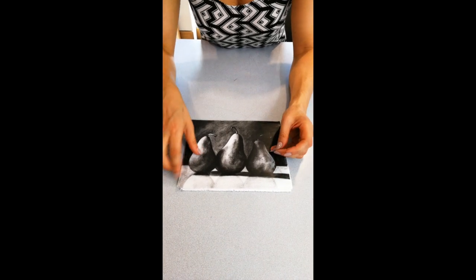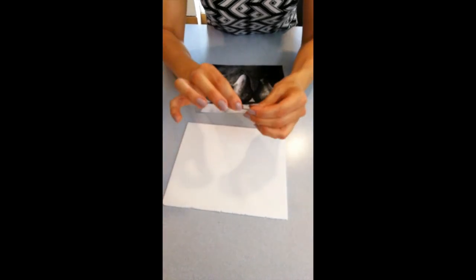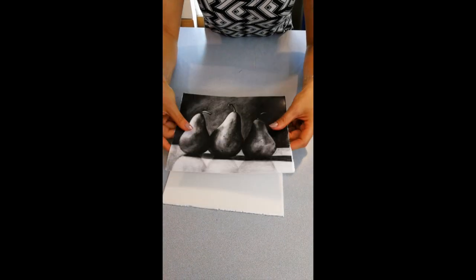Today we're producing a polyprint, and so what you need is a piece of polyboard, a nail, and an image that you're going to recreate.